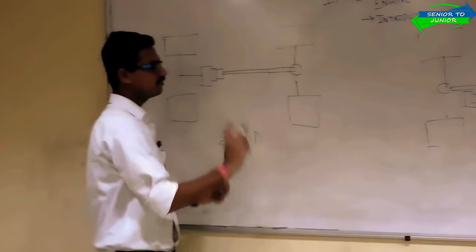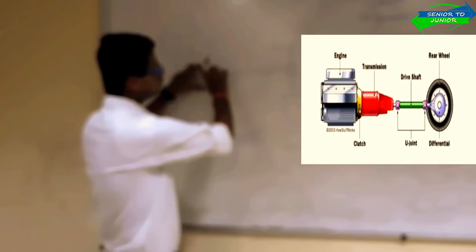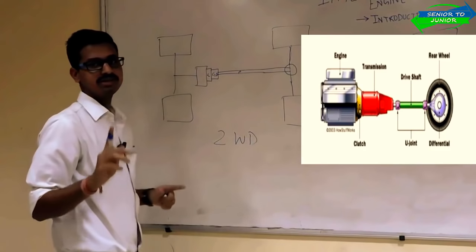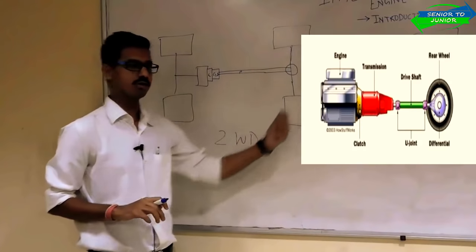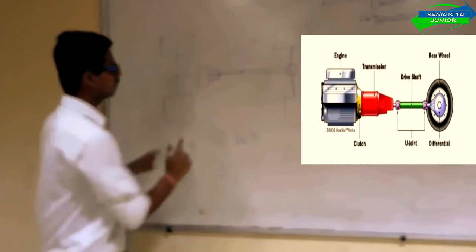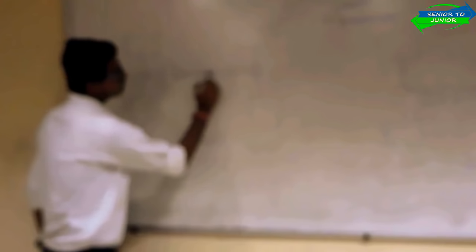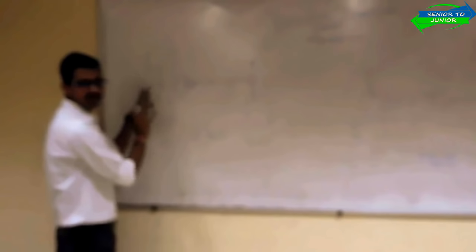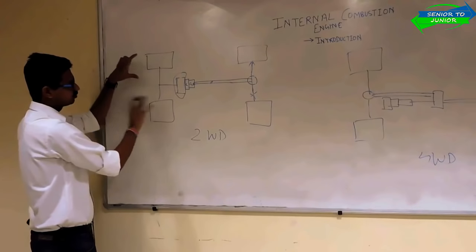In two-wheel drive, the engine generates power, it goes to the clutch, this is the gearbox, this is the propeller shaft, and this is the differential. I will be uploading a separate lecture on each part — the clutch, the gearbox, the shaft, the differential. But first you should know the layout, where the engine is located, because we are going to study internal combustion engine. In two-wheel drive, the engine generates power, this power is transferred through the propeller shaft to the differential, and it goes to the rear wheels. The front two wheels are free to rotate — they are not getting any power. The power is given only to the two rear wheels.